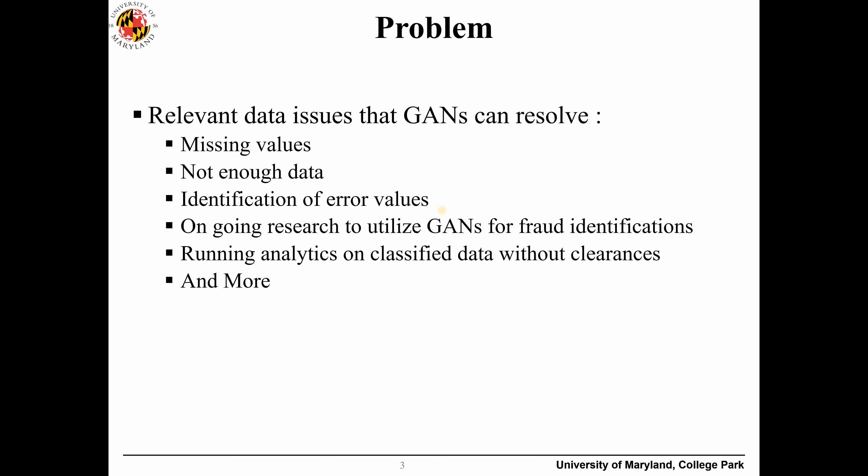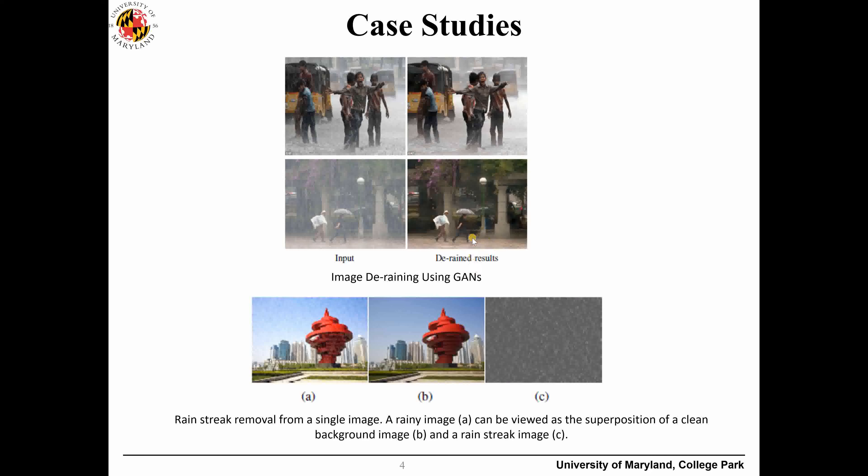We can identify error values. GANs have been explored to identify fraud. It also hypothetically can be used on a classified site to generate data, and those data could be passed to the unclassified site. Someone who does not have access to classified data can build a model and pass it back to the classified site, so data scientists with clearance can run that model and see how it functions — and it should function perfectly.